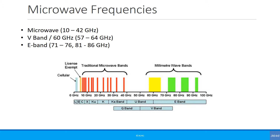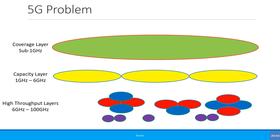Where 3GPP uses Band 1, 2, 3, the ITU names are the E-band, K-band, KU-band, and V-band. However, there is a problem with these bands: they have traditionally been used for microwave backhaul, but 5G is just around the corner. In 5G, multiple layers are needed — a coverage layer at sub-1 or sub-2 GHz, a capacity layer between 1 and 6 GHz, and a high-throughput layer from 6 to 100 GHz.